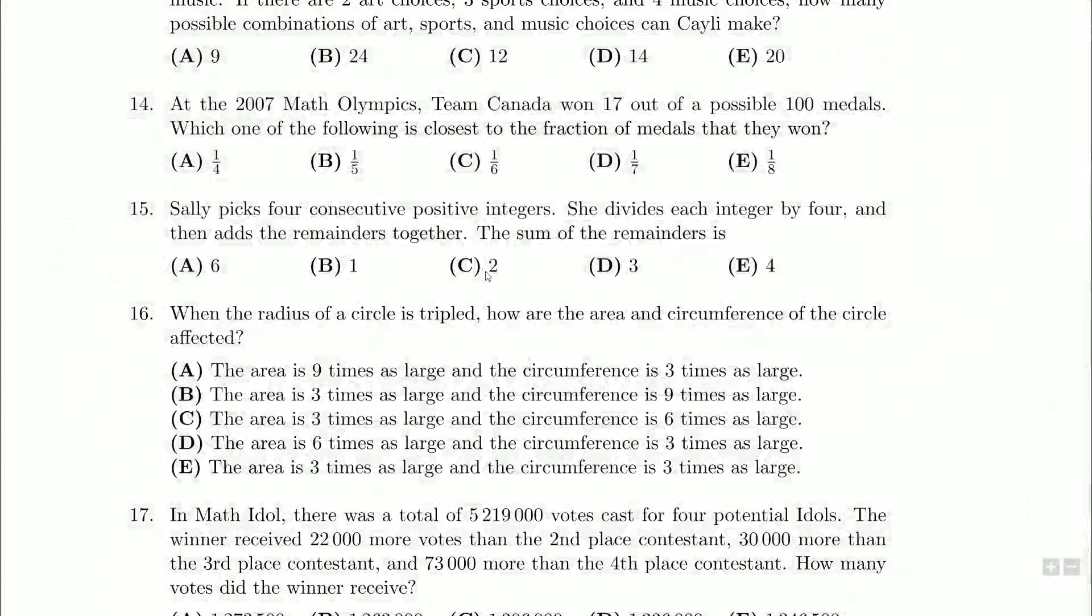Hello everybody and welcome back. We're looking now at question 15 on the grade 8 Gauss from 2007. Sally picks four consecutive positive integers. She divides each integer by four and then adds the remainders together. The sum of the remainders is...